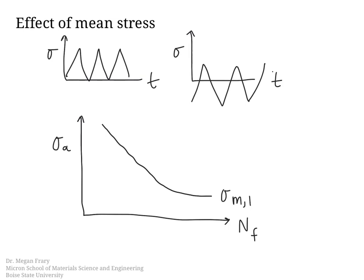So if we have a lower mean stress, we end up with a higher number of cycles for any given stress. So this would be at mean stress number two, which is less than mean stress number one. So essentially for any stress amplitude, the lower the mean stress, the higher the lifetime.